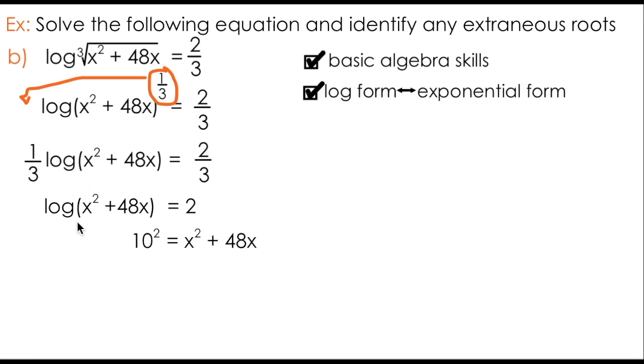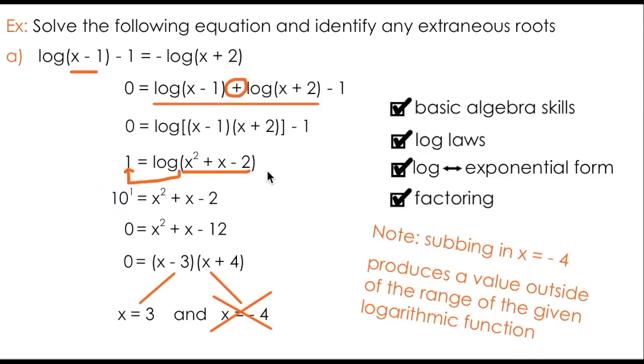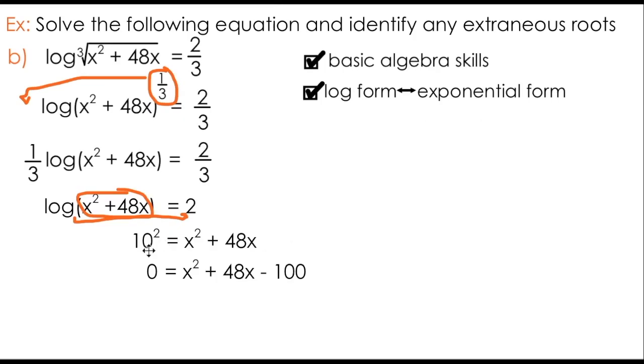I can change the result from logarithmic to exponential form by taking my base of 10, raising it to the power of 2, and setting it equal to the thing I was originally taking the logarithm of. Remember, we've applied that skill multiple times throughout this video. Again, using some basic algebra, I can bring 10 squared over to the other side, writing it as minus 100, resulting in another trinomial factoring problem.